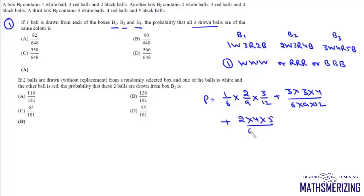Into 4 into 5 upon 6 into 9 into 12. Now this is 6 plus 36 plus 40 divided by 108 into 6. Now this is 82 upon 648 and that's your option A.